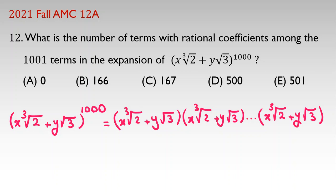The number of them is 1000: x times cube root of 2 plus y cube root of 3. How many terms do we have here? If you count all of them, it will be 1000.